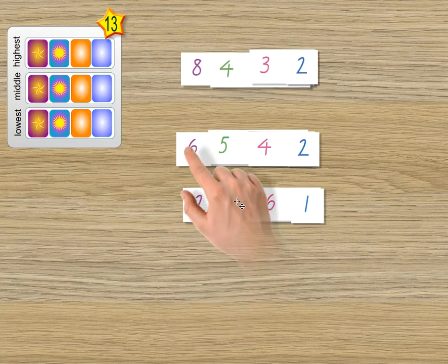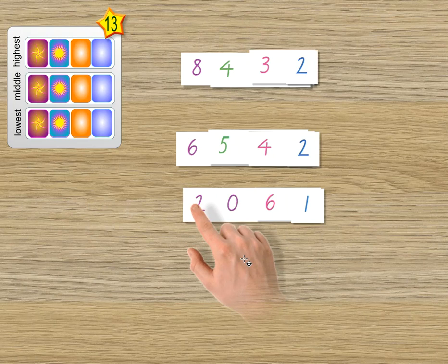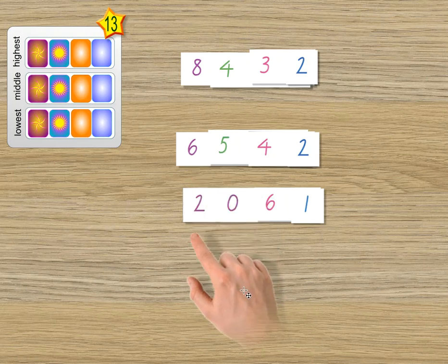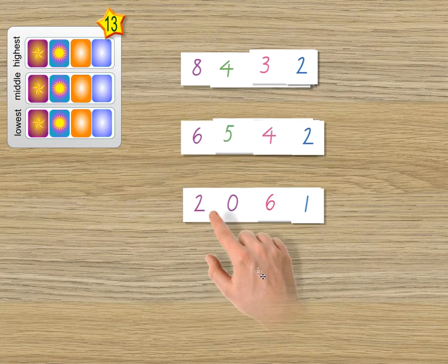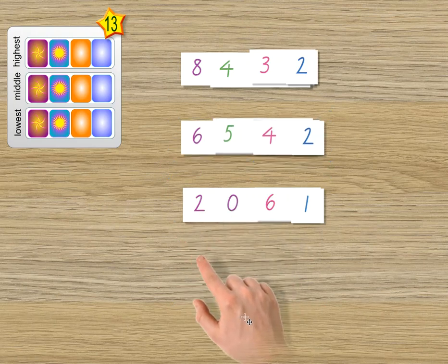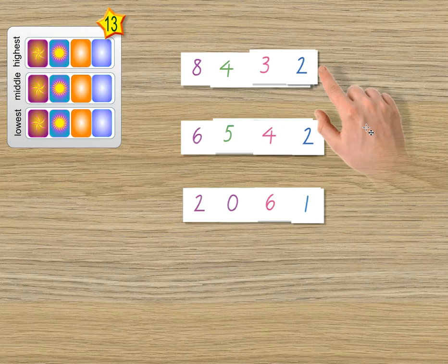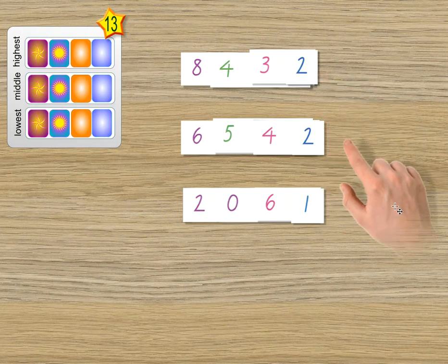Now, is 6,000 worth more than 200? Or 2,000 rather. Yes, it is. So that has to be in the second place. And that puts this one in the lowest place. So we have the highest value, the middle value, and the lowest value.